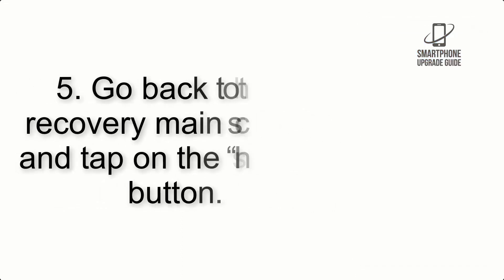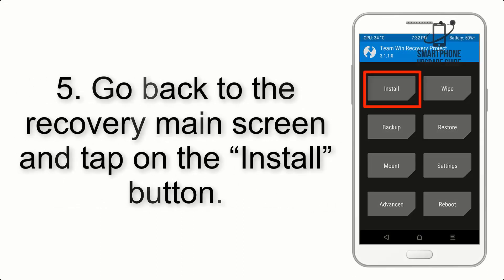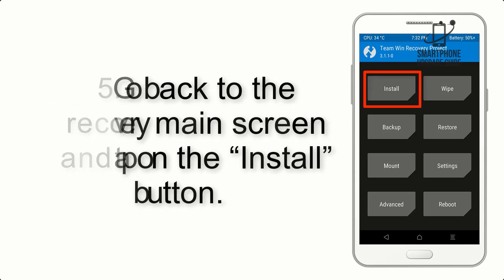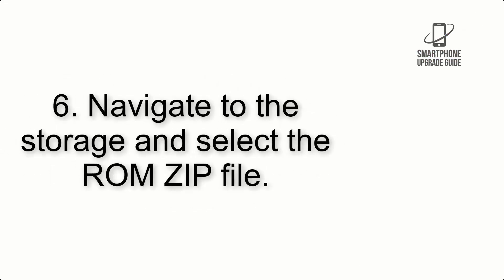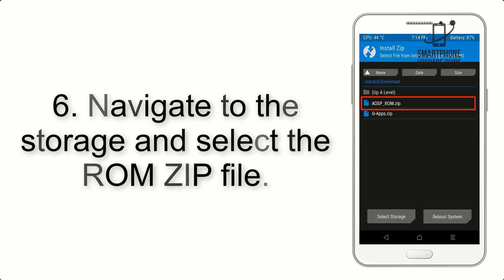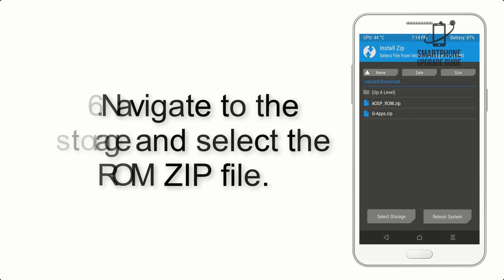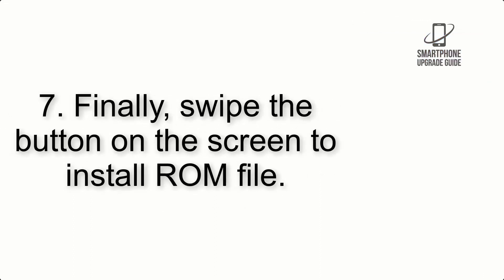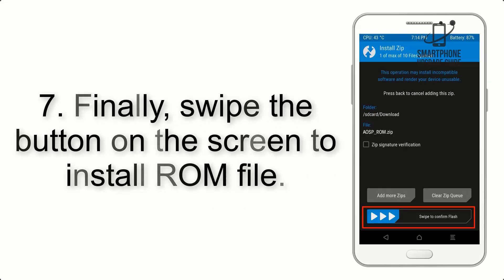Step 4: swipe the button to wipe the device. Step 5: go back to the recovery main screen and tap on the Install button. Step 6: navigate to the storage and select the ROM zip file.